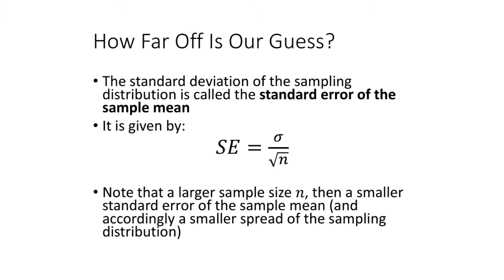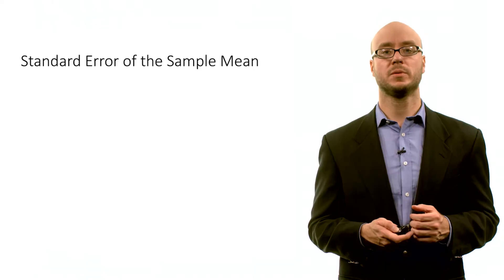However, we do have control over the sample size n. When we have a larger sample size — when that denominator is larger, because the numerator is fixed — we're going to have a smaller standard error of the sample mean, meaning that standard deviation of the sampling distribution is going to be smaller. The key point is that in general we're going to have less sampling variability. Our sample means are going to vary less from sample to sample the larger the sample size we use to calculate those sample means.